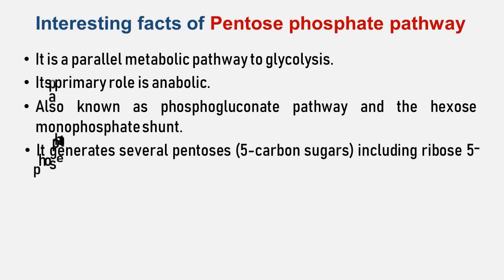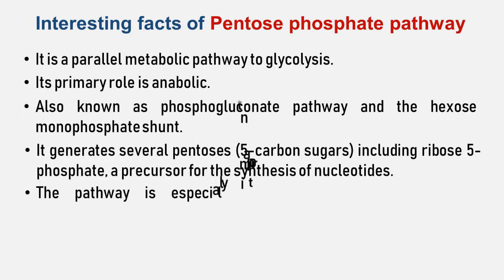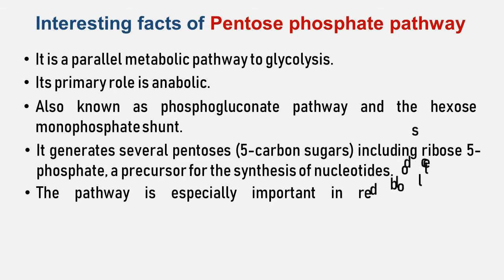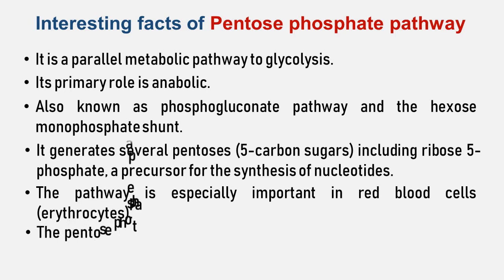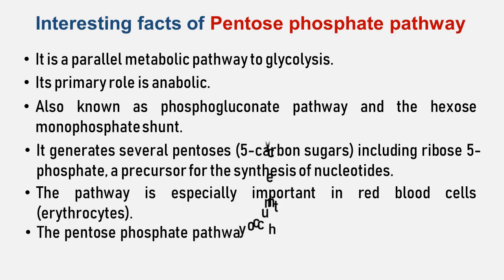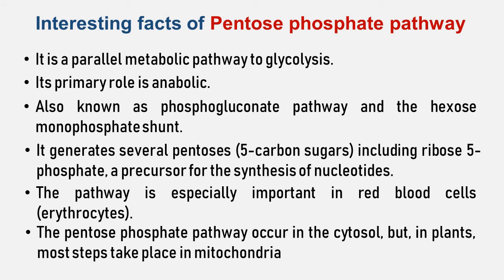It generates NADPH and pentose 5-carbon sugar as well as ribose 5-phosphate. Ribose 5-phosphate is a precursor for the synthesis of nucleotides. The pathway is active in many organs such as the liver, adipose tissue, adrenal cortex, thyroid, testis, ovary, and lactating mammary glands, but especially important in red blood cells (erythrocytes) as it detoxifies reactive oxygen species.